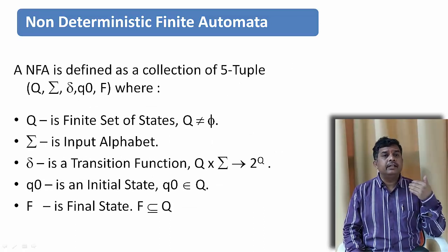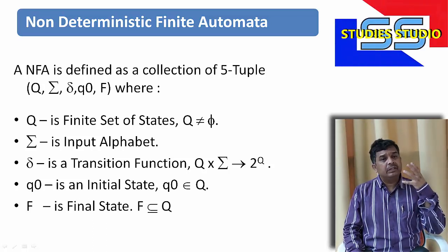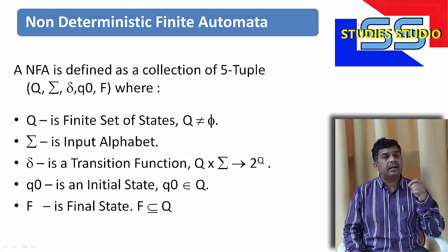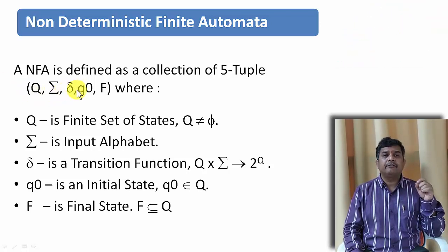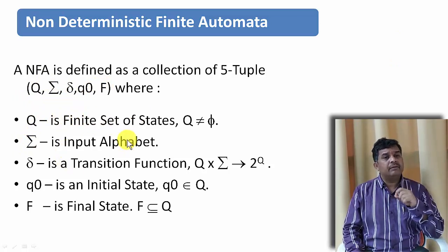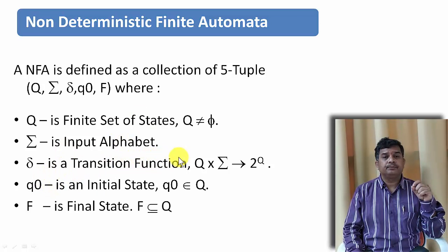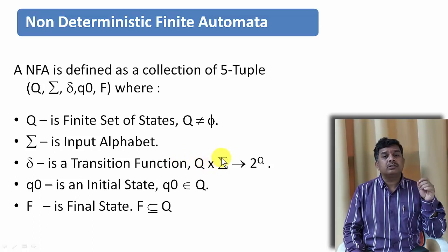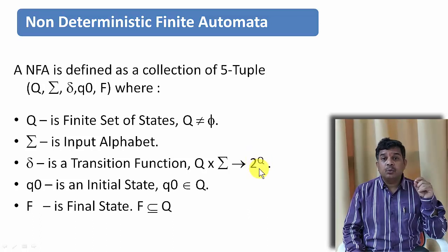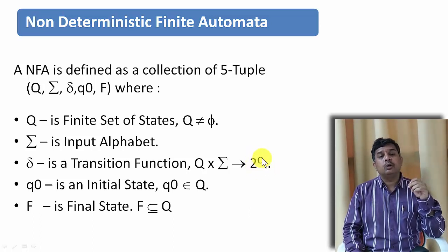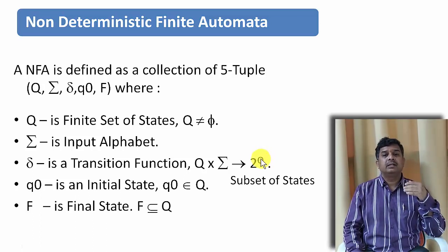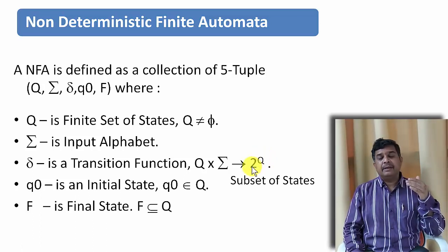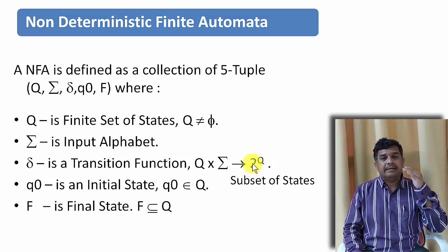Like DFA, it is also defined with 5 tuples. That is Q, Sigma, Delta, Q0 and F. Where Q is the finite number of sets. You can say Q is not equal to phi. Sigma is the input alphabet. Delta is the transition function. As we have already discussed under DFA, it is a function that maps Q cross Sigma to 2 to the power Q. In DFA, it was only Q and in NFA, it is 2 to the power Q. It means it is going to a subset of the states. What is the meaning of that? Just hold on for some time. We will be discussing about it.